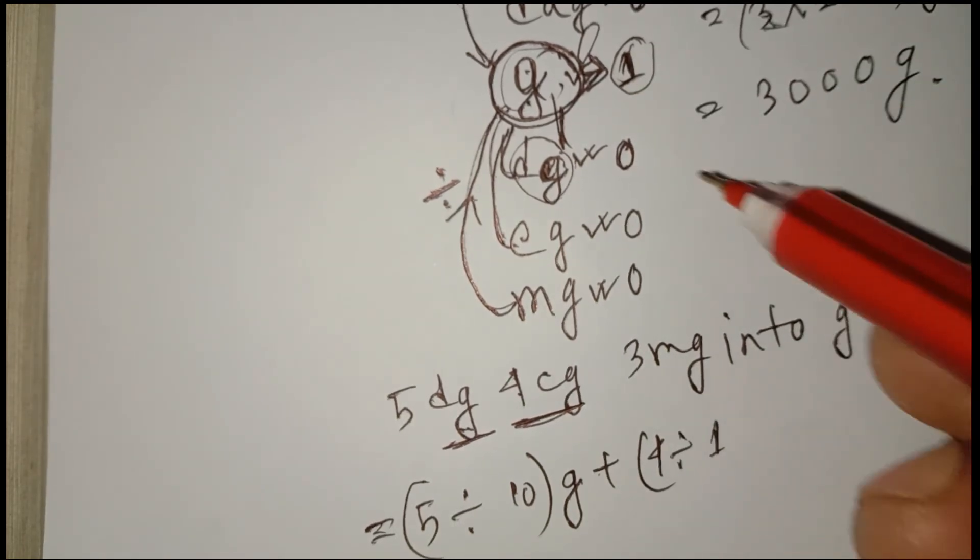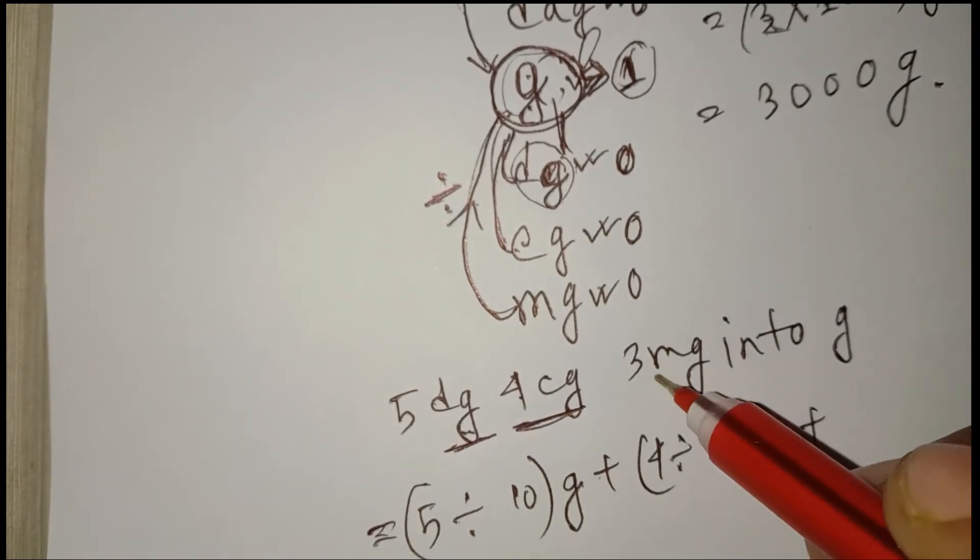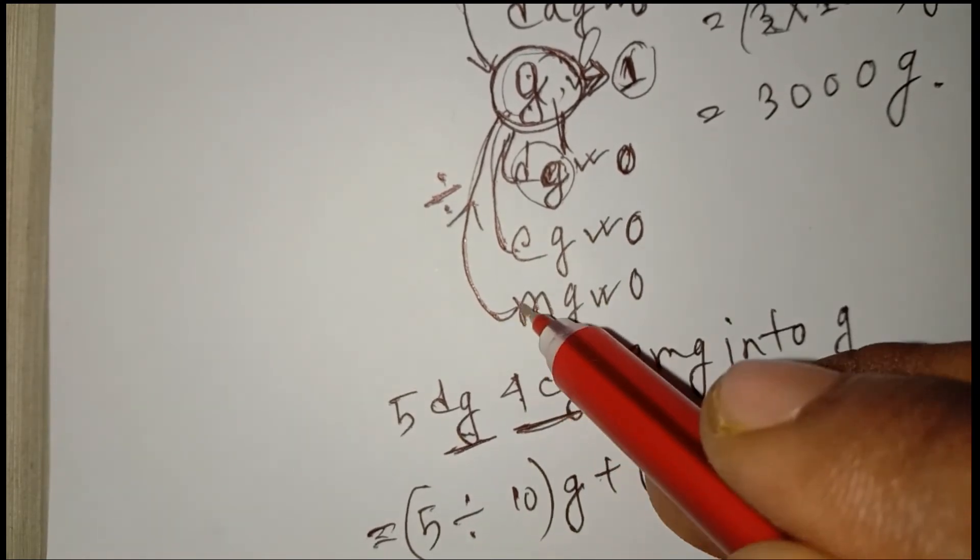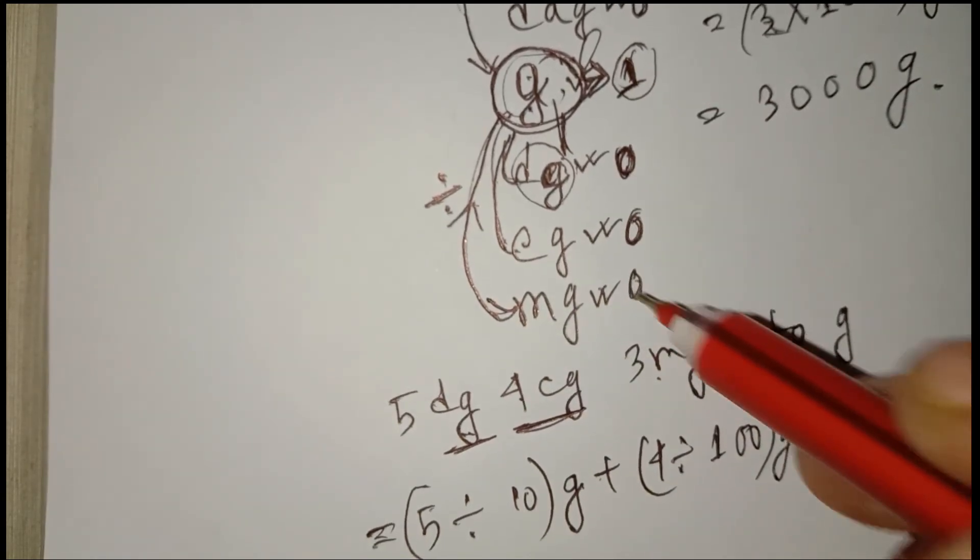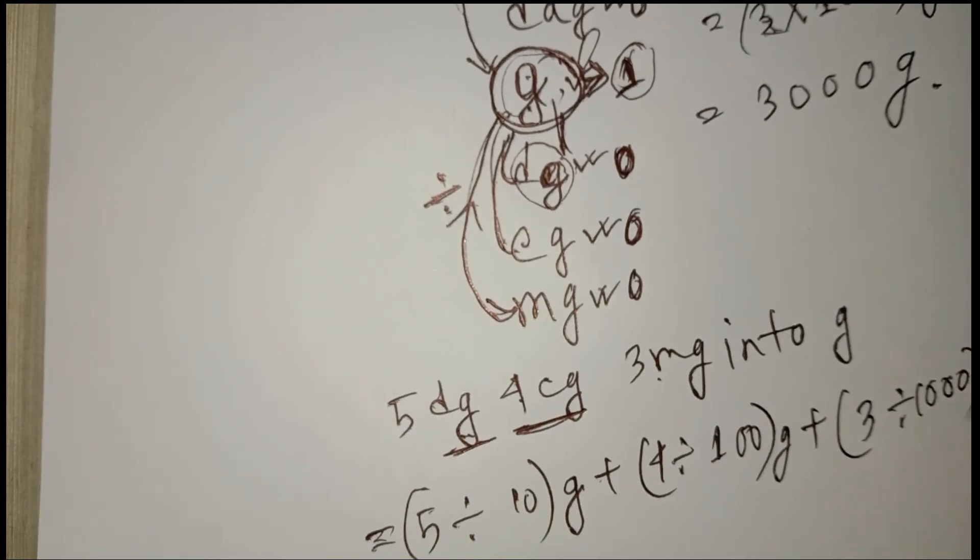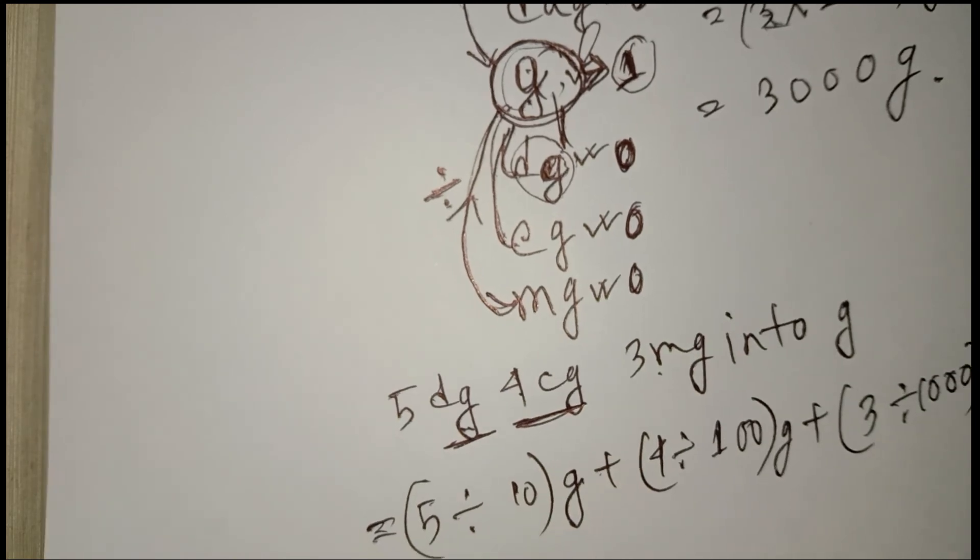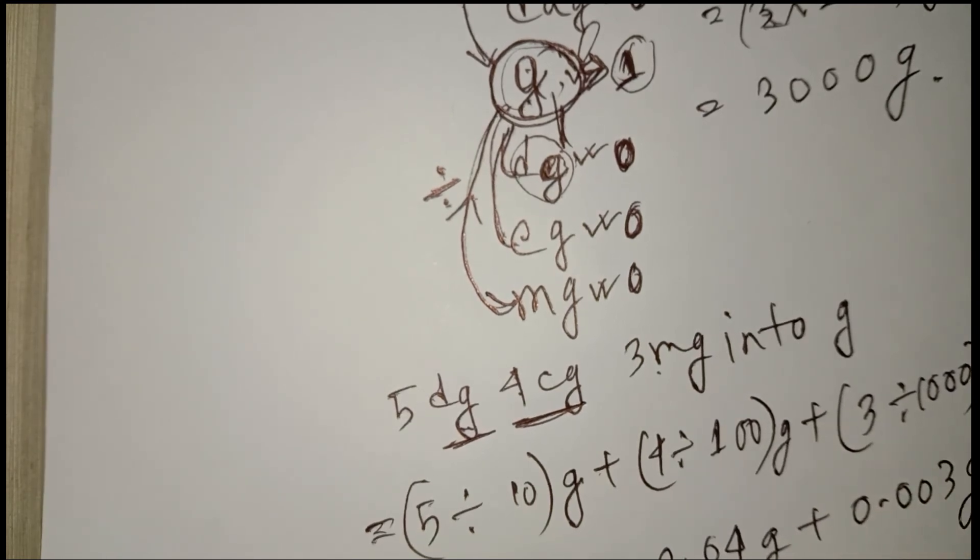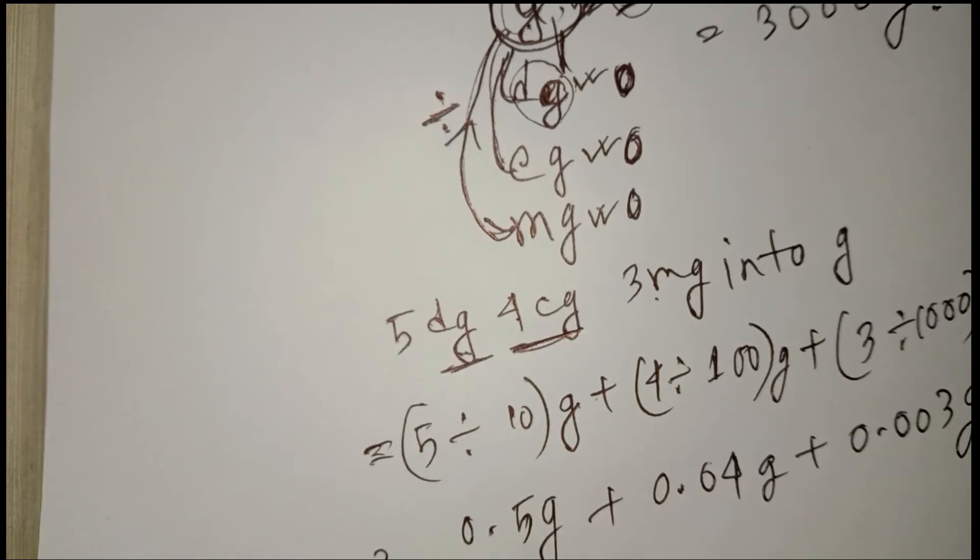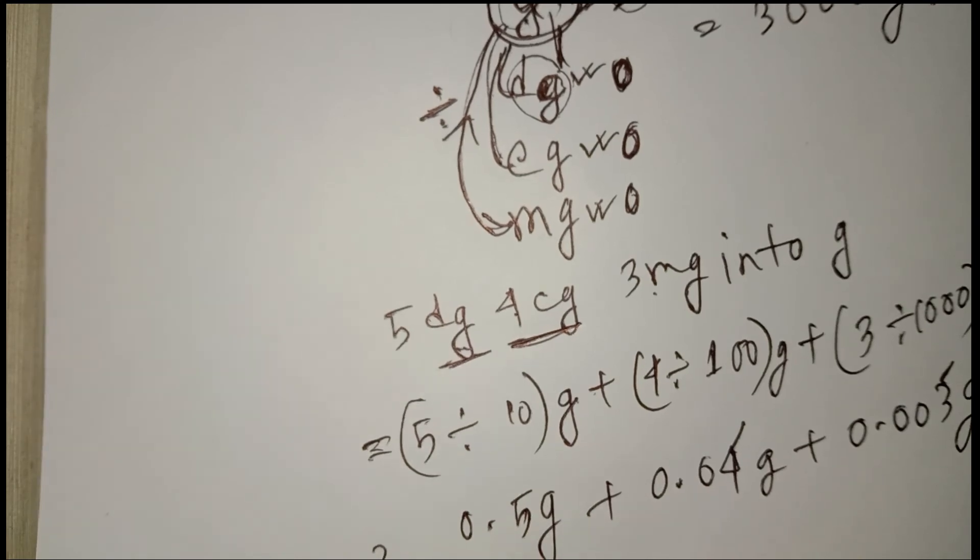Now 3 mg: 1 gram is 1-0, 2-0, 3-0, so divide by 1000. 3 mg to gram. So: 0.5 gram, 0.04 gram, 0.003 gram. Total: 0.543 gram.